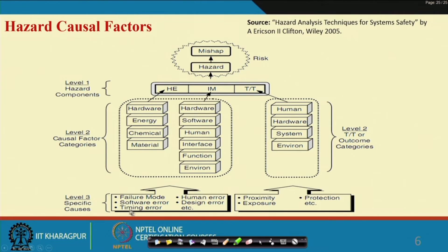Level 3 factors include: failure mode, software error, timing error, human error, design error, proximity problem, exposure problem, and protection problem. The amount of protective measures that must be there to prevent an accident may be absent. We will slowly discuss all these, but these are the key concepts and terminologies — I am just showing you the complexity, diversity, and multidisciplinary nature of this topic.